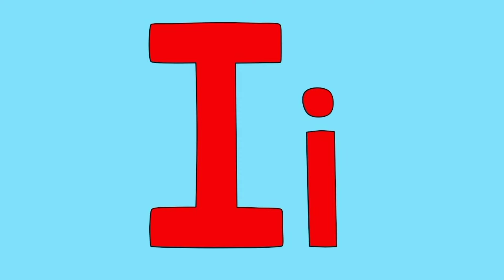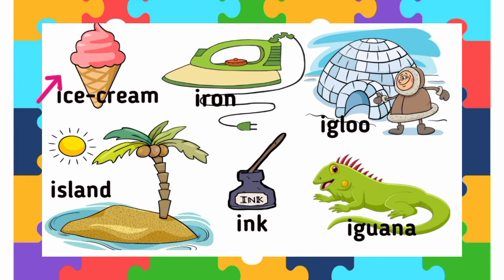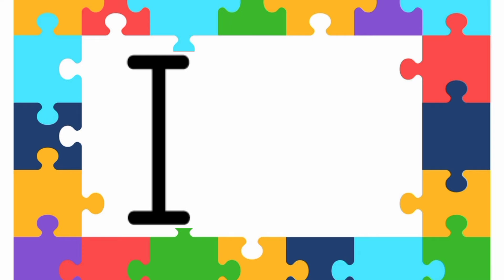Now today is the turn to learn the letter I. I sound E. I sound E. E ice cream, E iron, E igloo, E island, E ink, E iguana. I sound E. What is the letter?